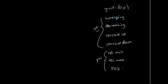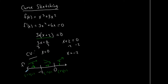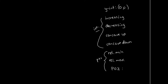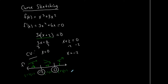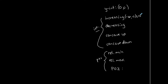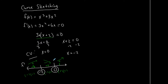Let's input what we just determined. The function is increasing from negative infinity to −2 — that's the first interval. There's also another interval where it's increasing: from 0 to positive infinity. For decreasing, from −2 to 0 the function is going down.